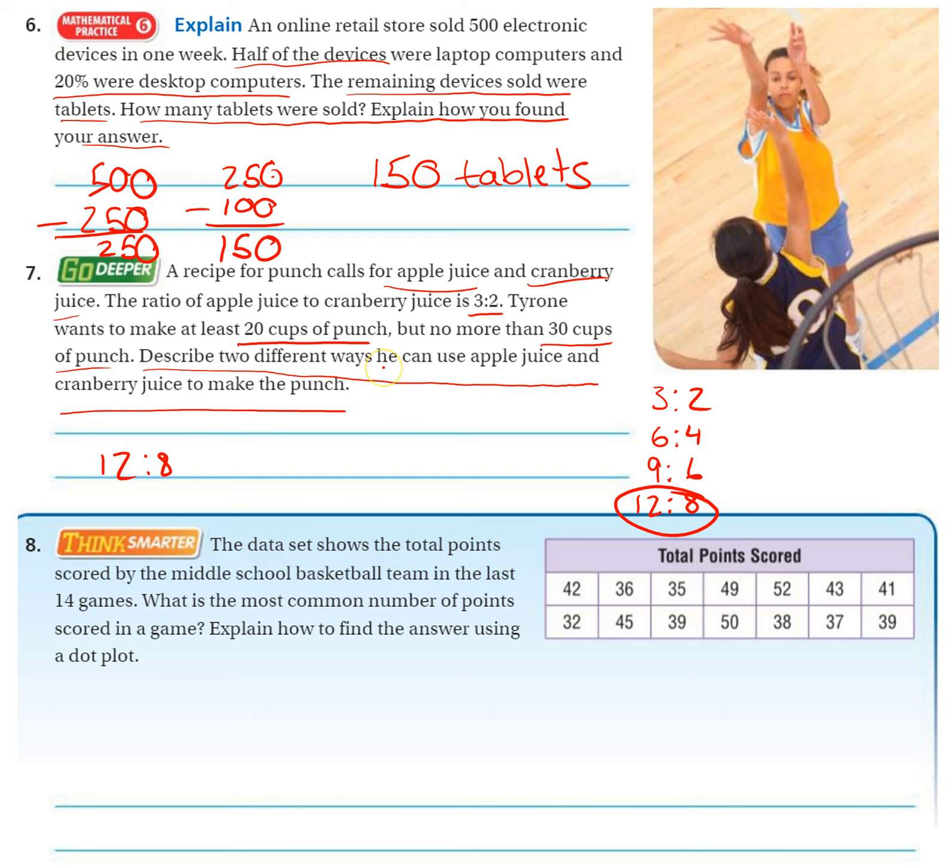So we can do a 12 to 8 ratio, and that will be 20, but no more than 30. So let's come up with another way: 15 to 10. And that is more than 20, but less than 30. So that would be another ratio we could use. So we're just finding multiples.